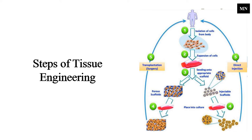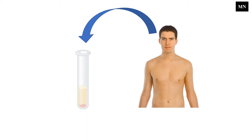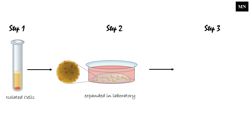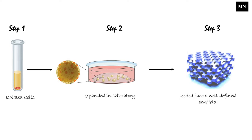There are five important steps of tissue engineering. In the first step, the cells are isolated from the patient's body. In the second step, the isolated cells are expanded in laboratory. In the next step, once we have enough number of cells, they can be seeded into a well-defined scaffold.